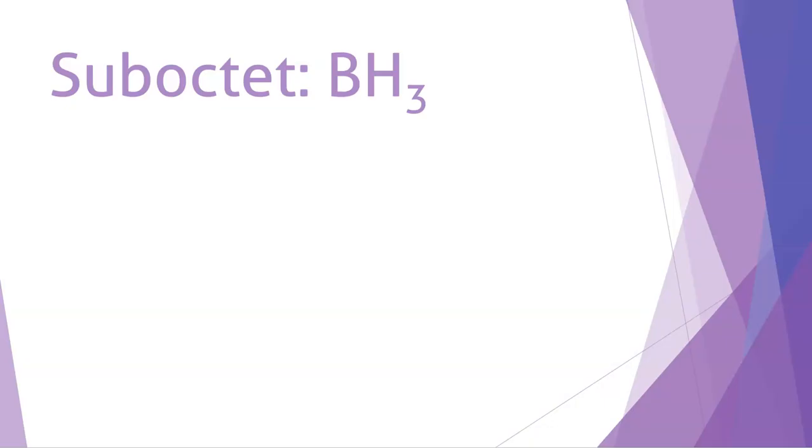So we'll start with the sub-octet. Boron is the most common element that exhibits this sub-octet behavior. Boron starts off with three electrons, and in the end, it's happy with six in total.